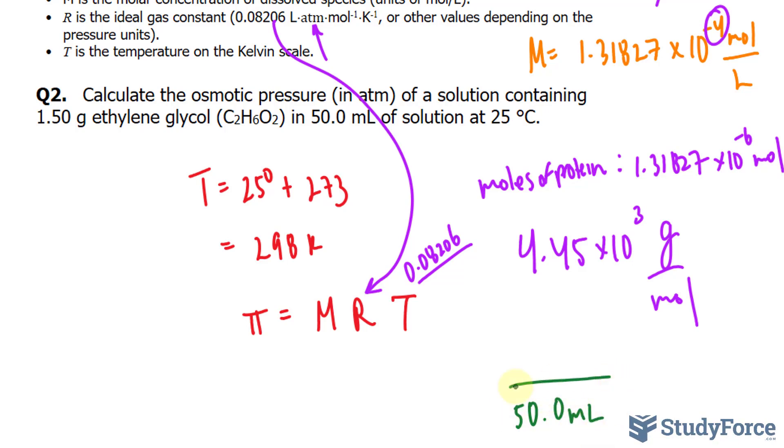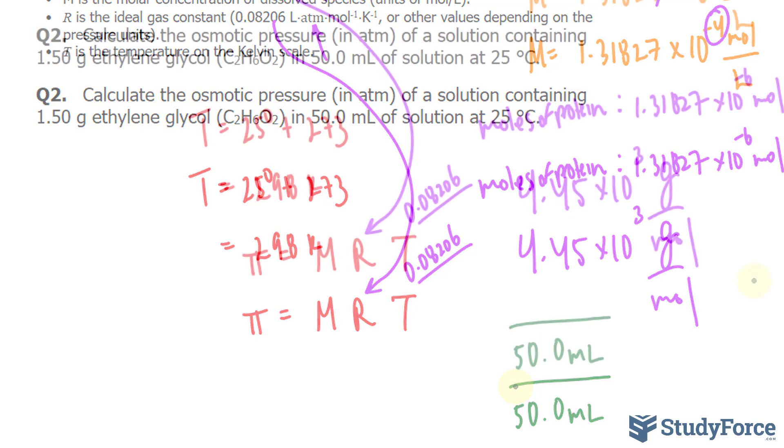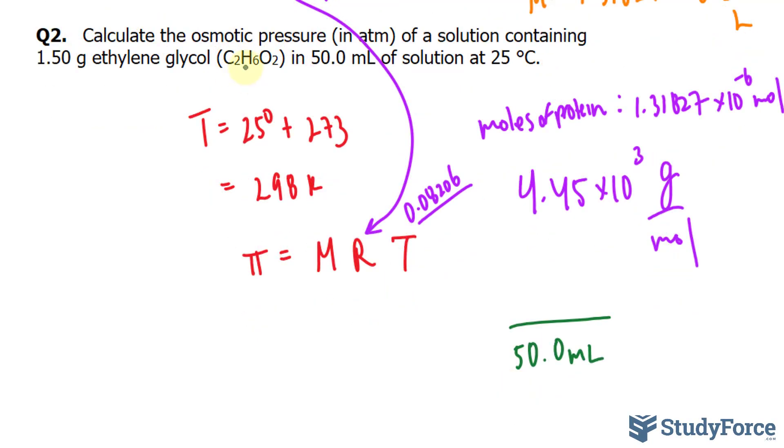It will eventually need to be converted into liters. We need to find the moles of the solute. That's ethylene glycol. First, we find the molar mass of ethylene glycol. That will give us grams per mole.